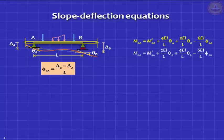We introduced you to the concept of chord rotation. Phi is nothing but the differential settlement divided by the span, assumed to be clockwise positive. So when the chord rotation is positive, you get a negative sign, and we gave a proof for this.